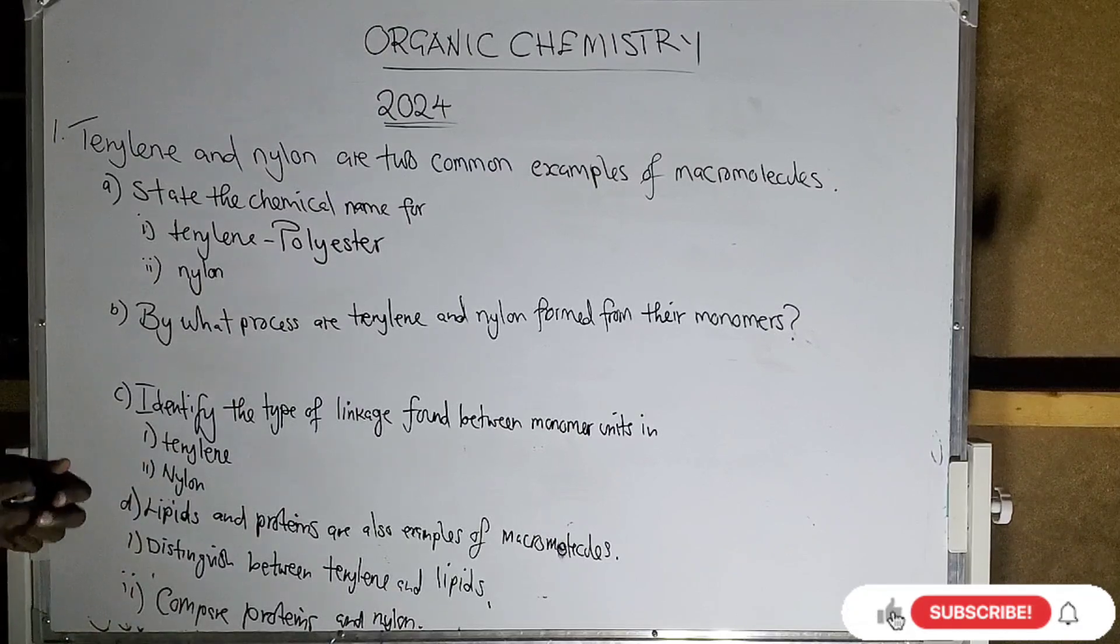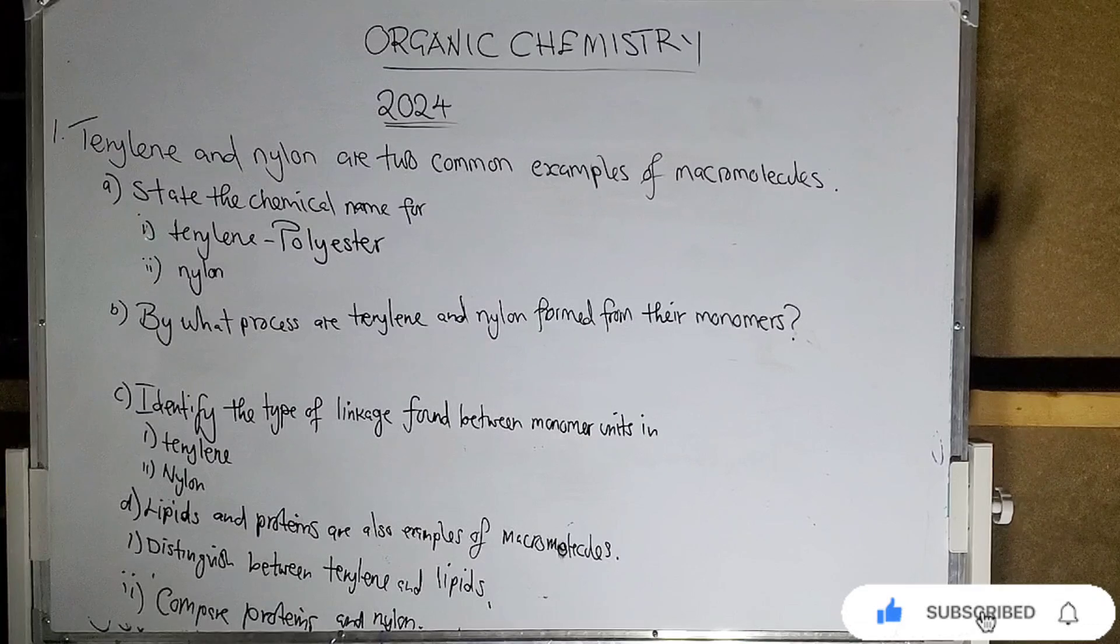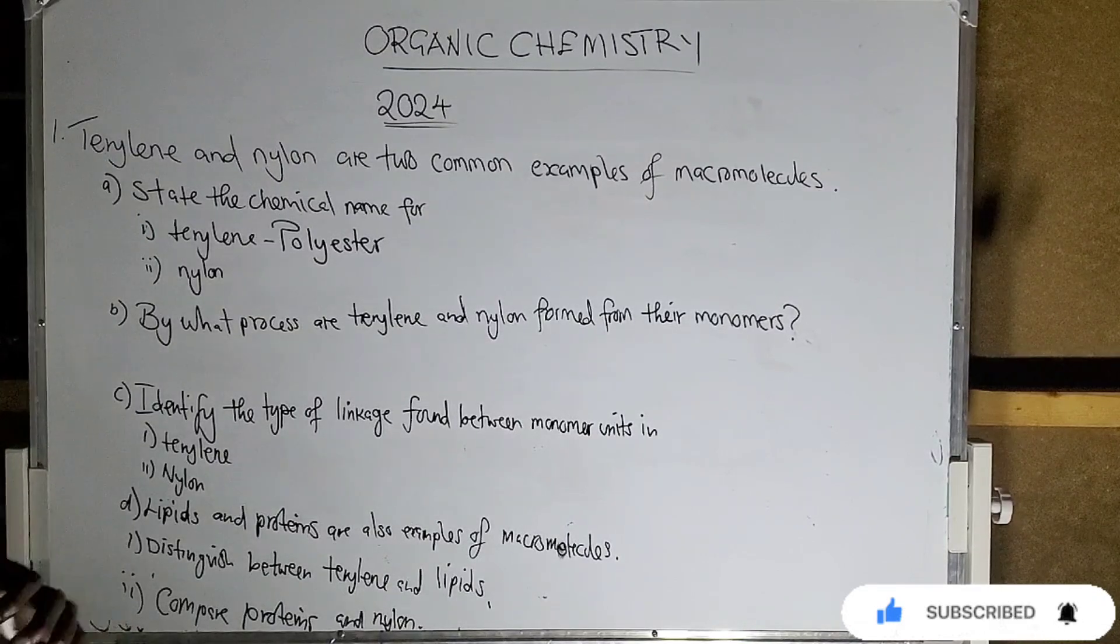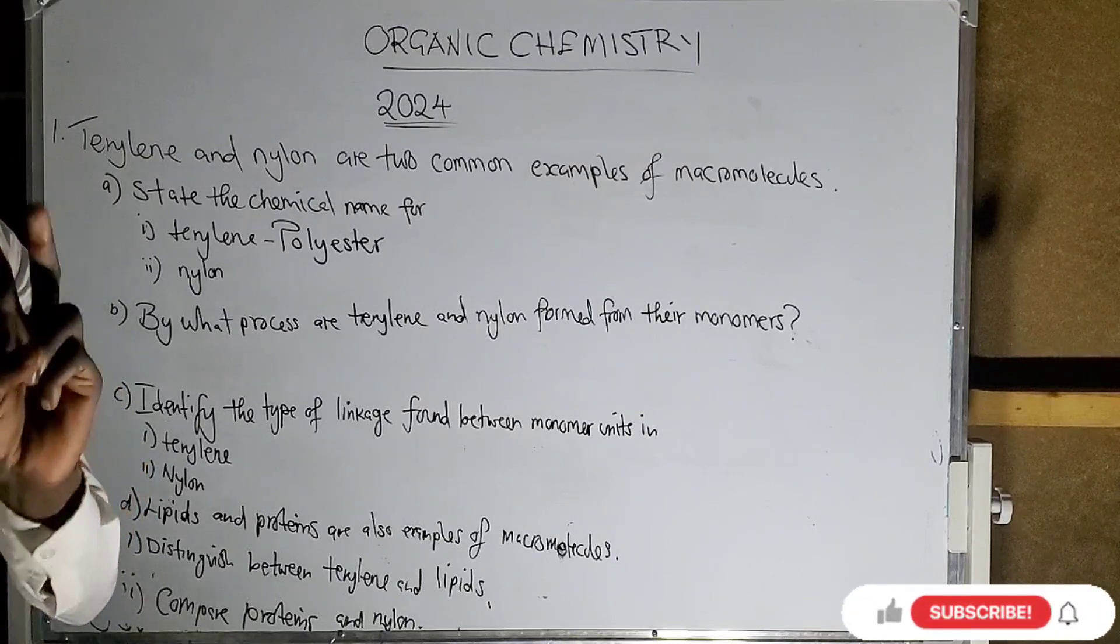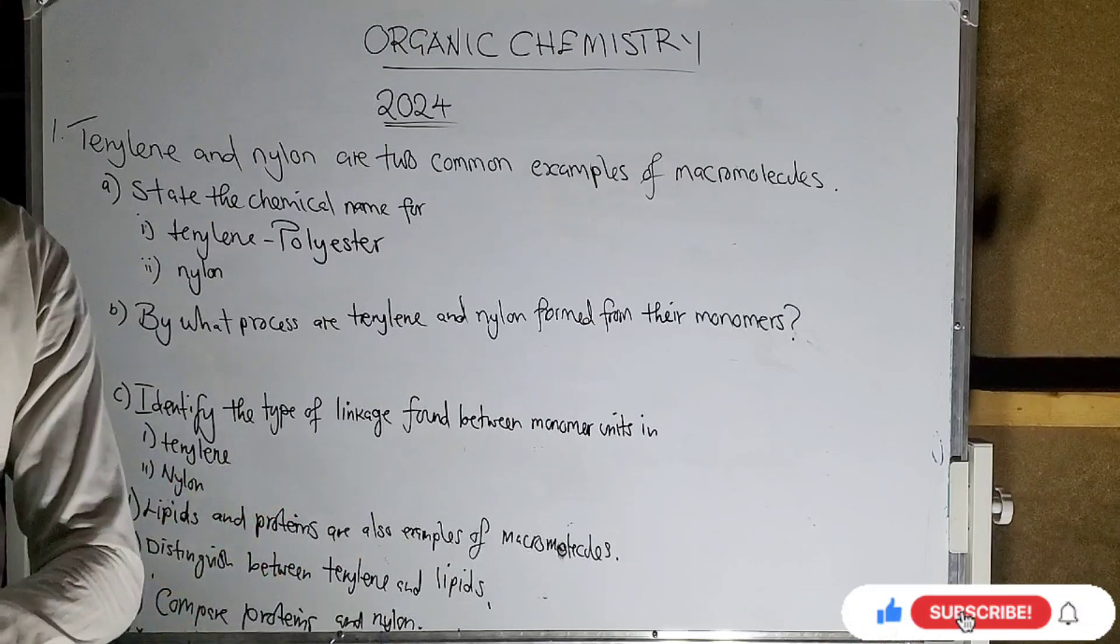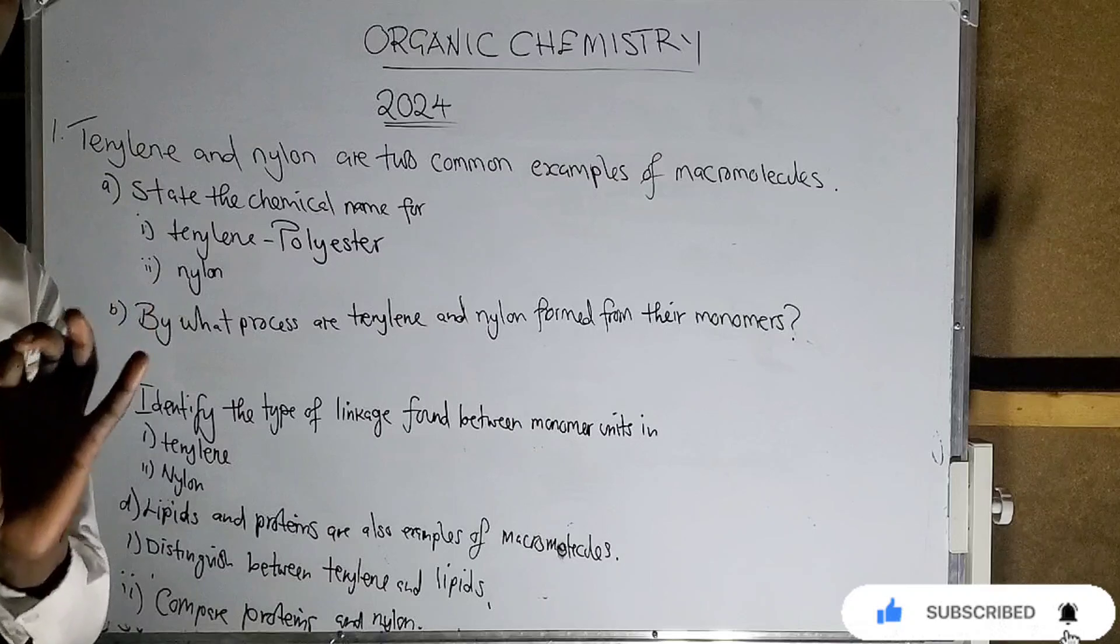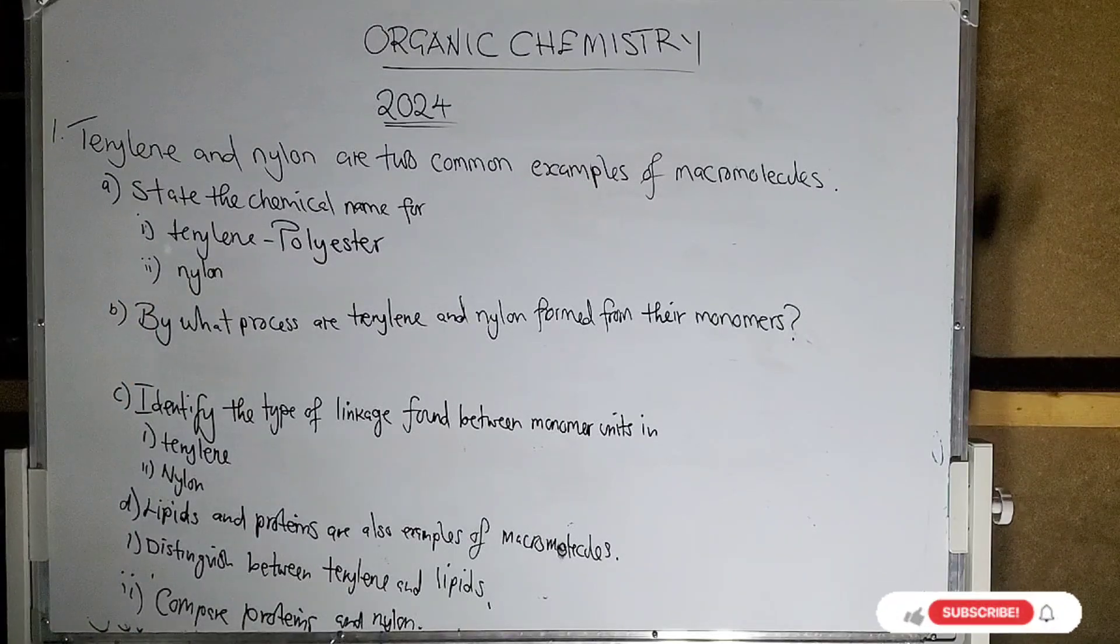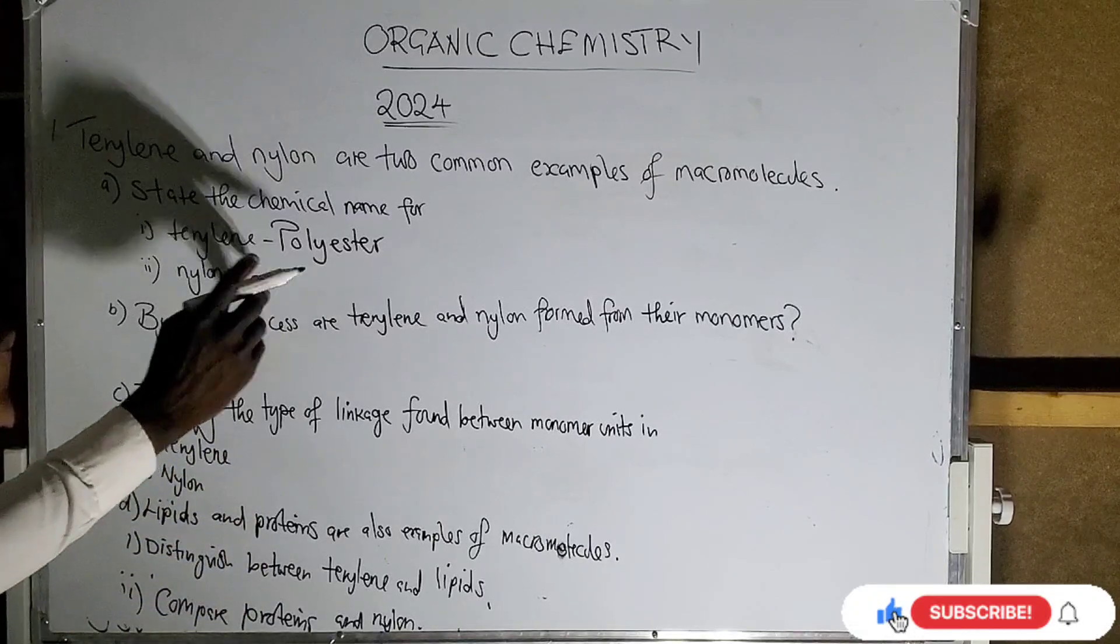By the way, these two are under synthetic polymerization. Now, under synthetic polymerization, you have additional polymers and condensation polymers. These two, Nylon and Terylene, are under condensation polymers. Are we together? Very good. So these are condensation polymers.